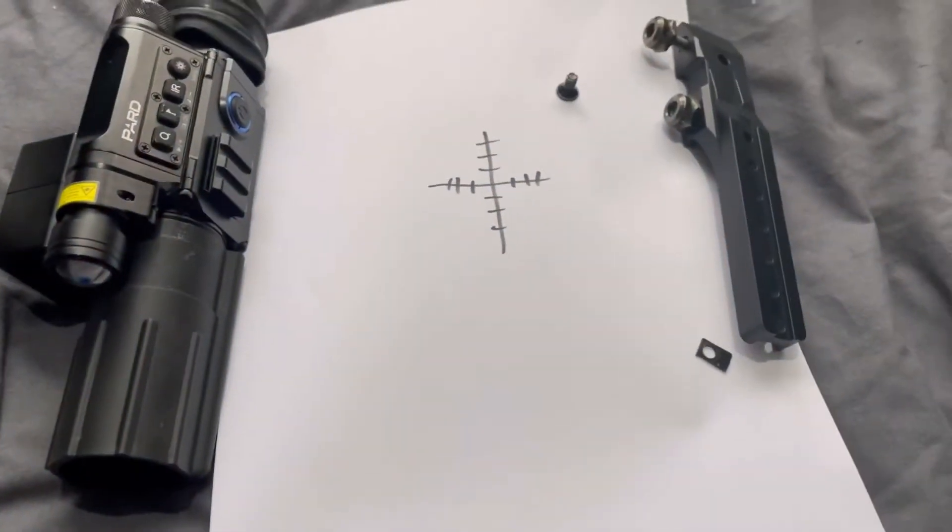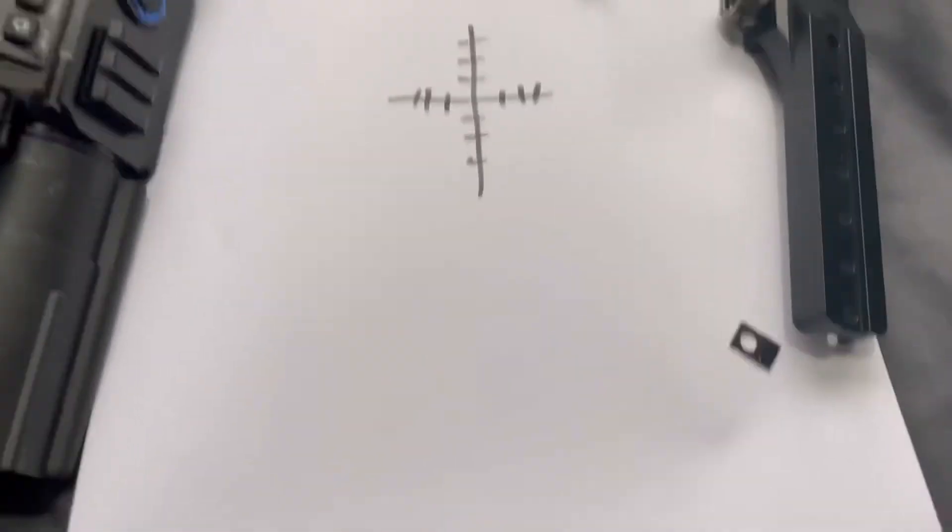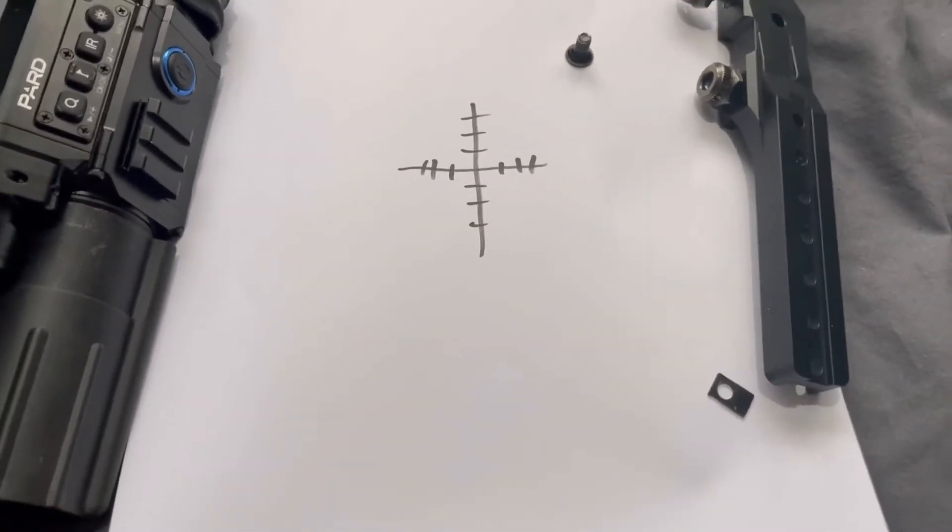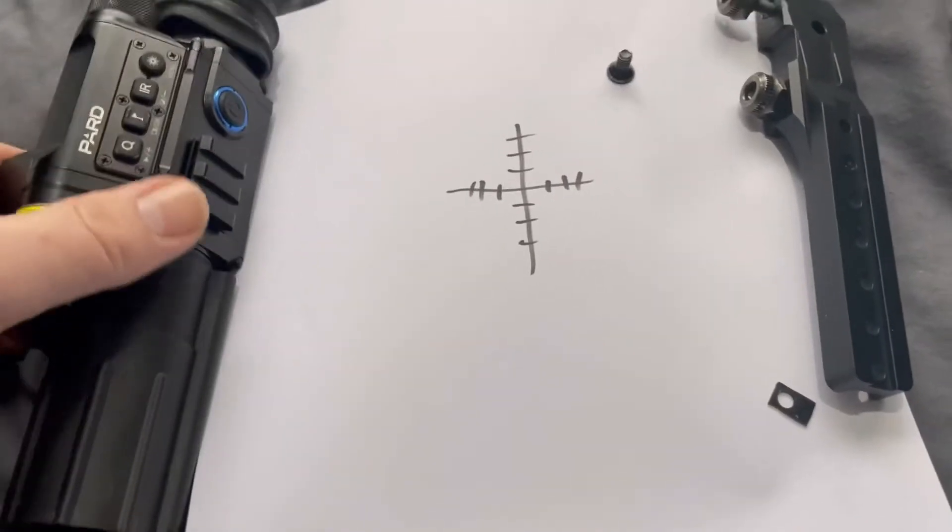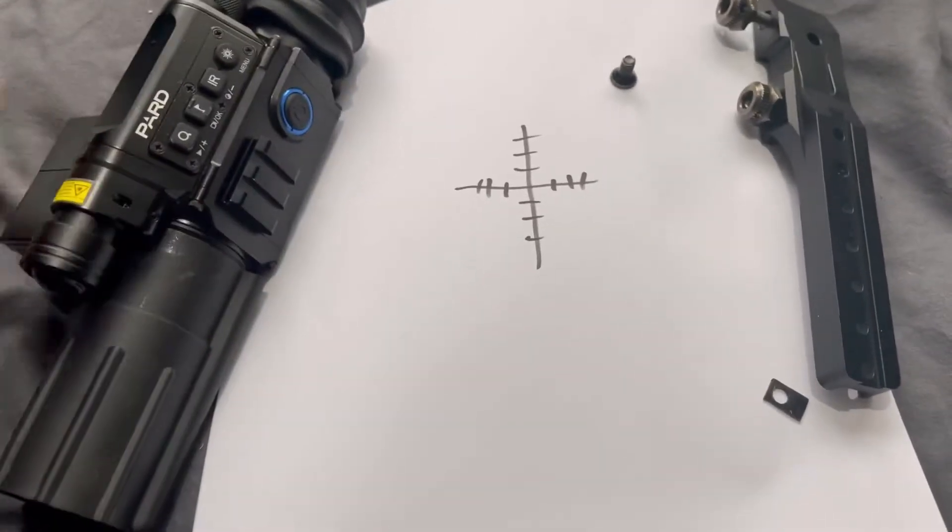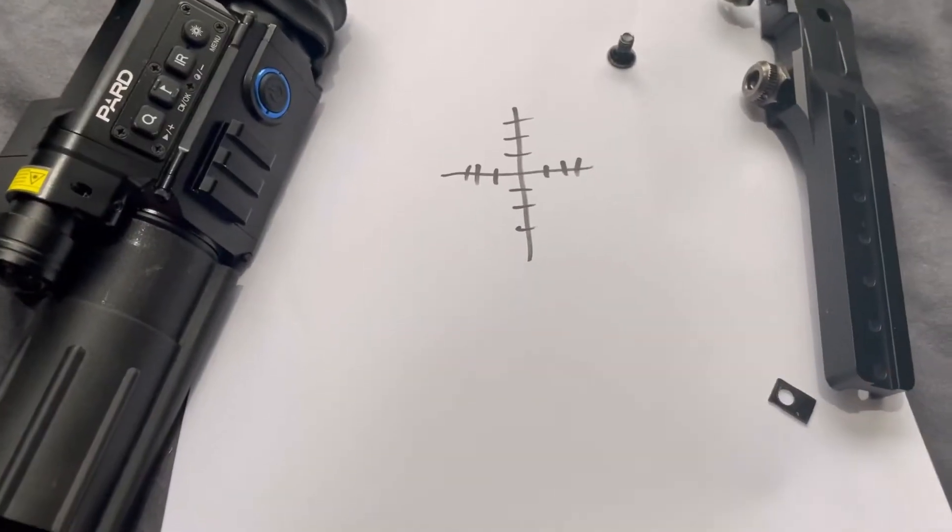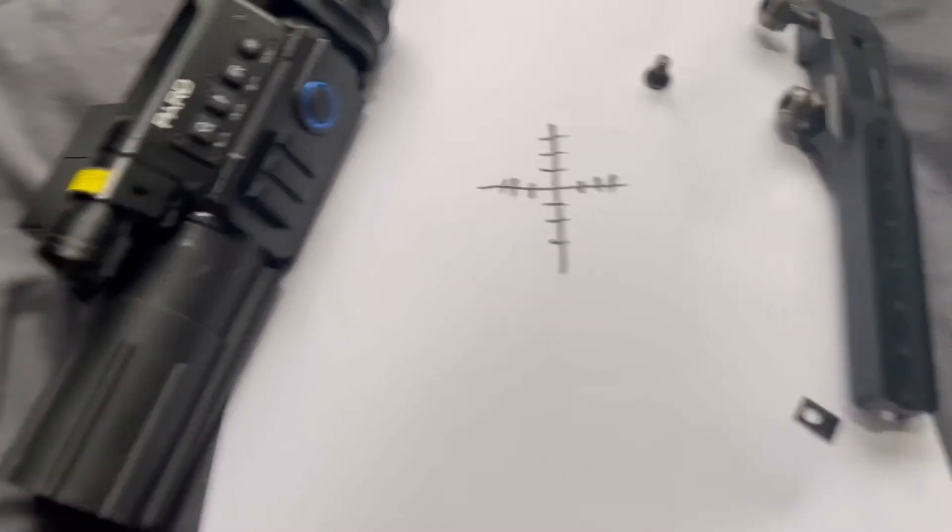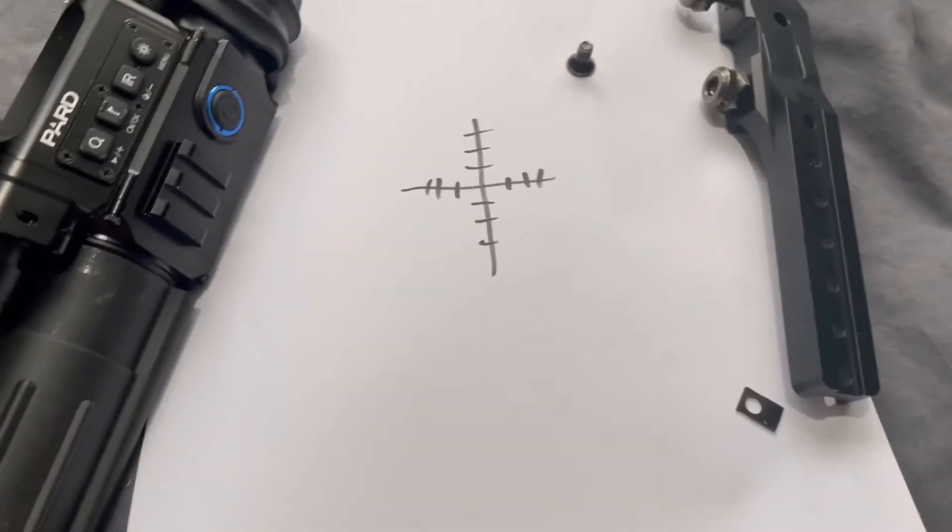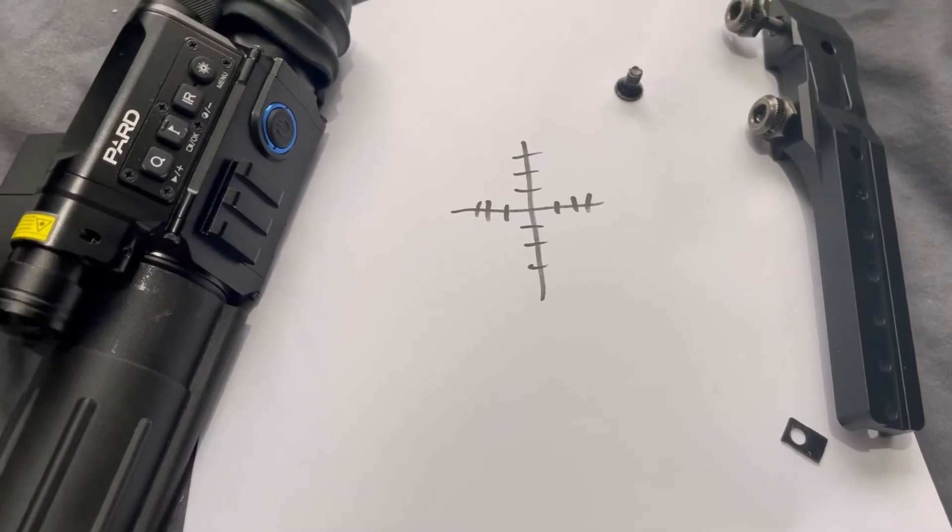Right, first thing you want to do, you want to set up at 10 yards or 15 yards for an initial zero. So in your menu you want to go to your crosshairs or your reticle adjustment and make sure it's on 0x and 0y so you know that that is dead central. Set up on your target and take a couple of shots.